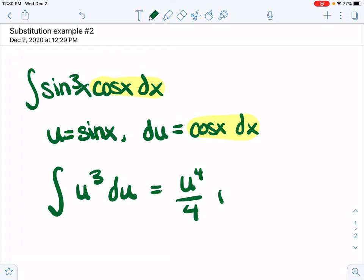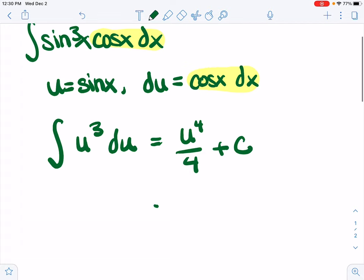So we have u to the fourth over 4 plus c, which is sine to the fourth x over 4 plus c, which is our anti-derivative.